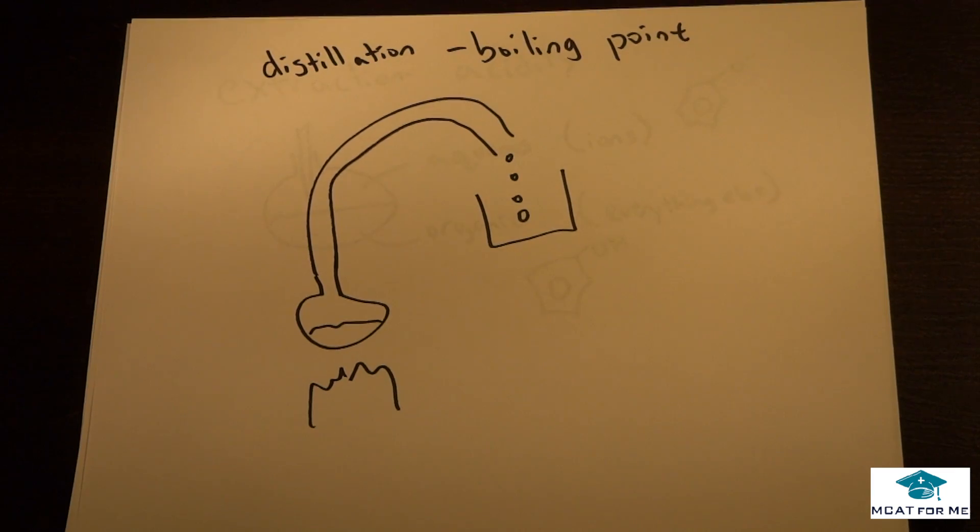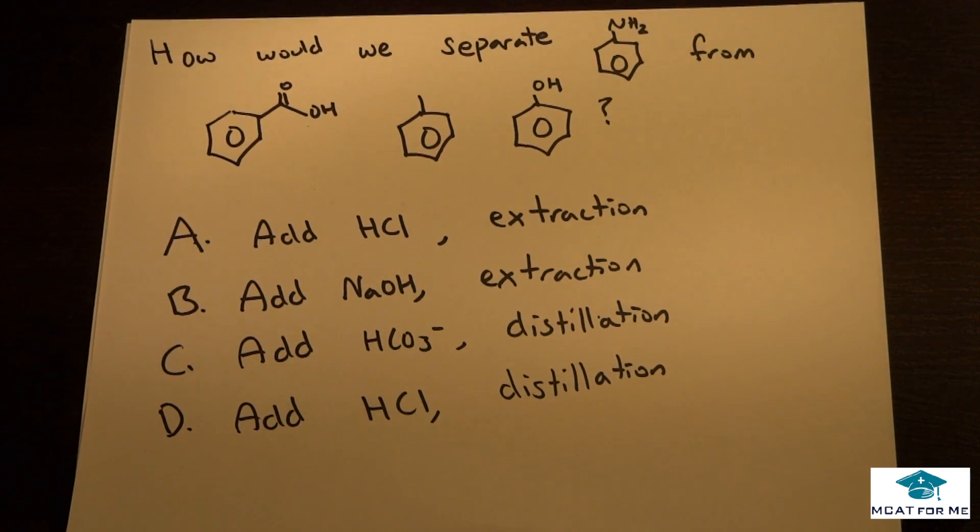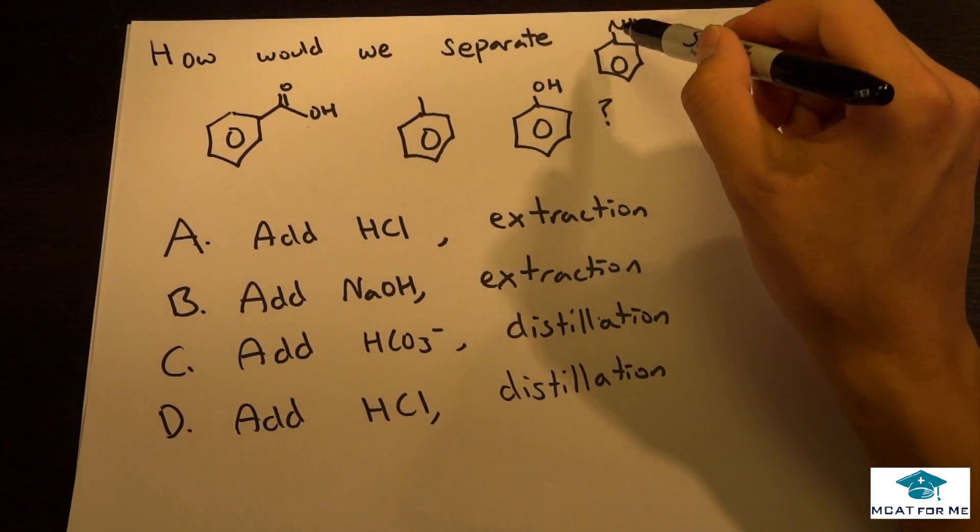So distillation is separated by boiling point, extraction is separated by acidity. So if we look back at our molecules, what can we notice between all of these different things?